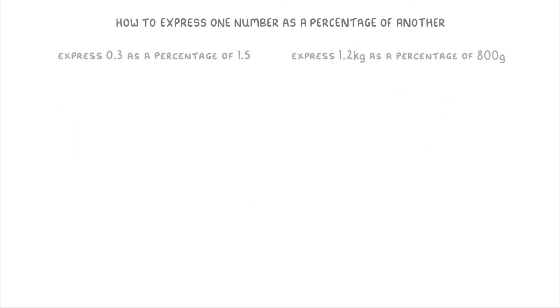Let's have a go at a couple more. This first one on the left, express 0.3 as a percentage of 1.5, might look a bit tricky because it involves decimals, but it works in exactly the same way. So we can turn it into a fraction by doing 0.3 over 1.5, and then we just multiply it by 100 to get 20%.